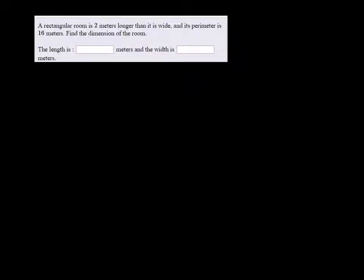All right, a rectangular room is two meters longer than it is wide, and its perimeter is 16. Find the dimensions of the room.